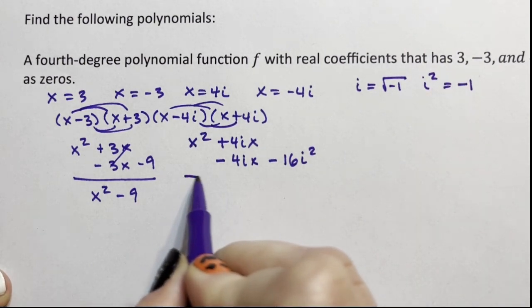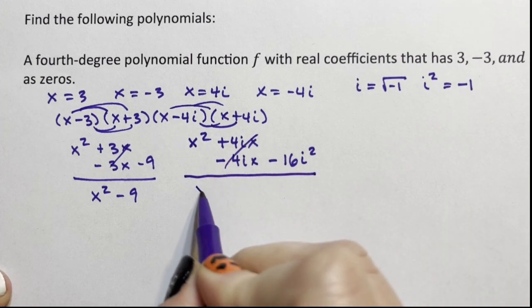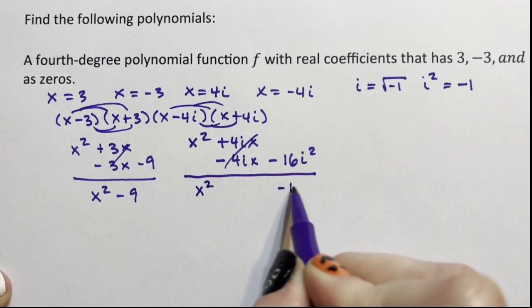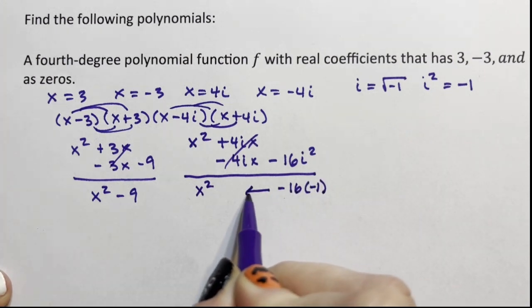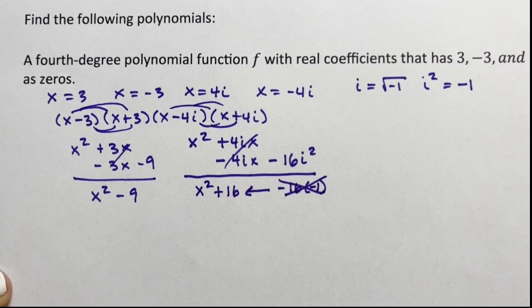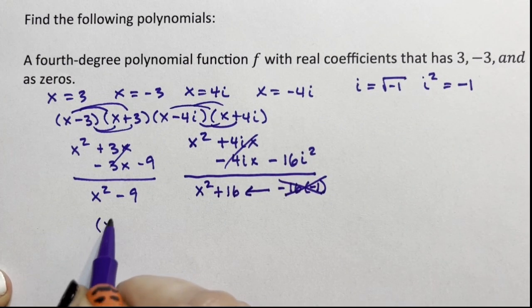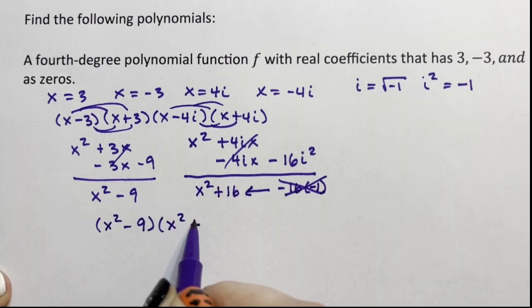So when I cross the line, those go away, and this is x² - 16 times -1. So I'm going to move this over, and it's going to become +16.